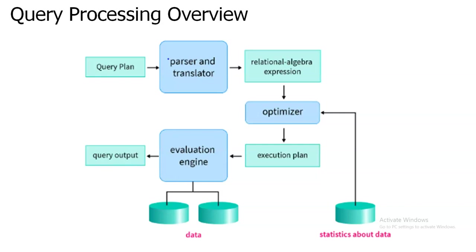After translation, the optimizer plans how to execute the operation by finding the minimum cost using factors like CPU time and number of operations. Once a proper execution plan is established, it moves to the evaluation engine, which follows the optimizer's plan, executes the operation, and retrieves the data from the database. This concludes the query processing overview. Thank you.